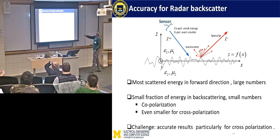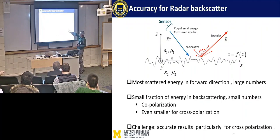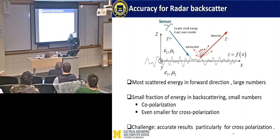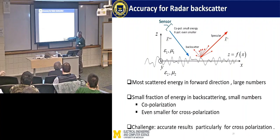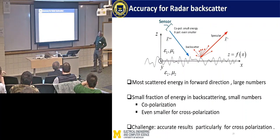For radar, most of the energy goes to the specular direction, but when you go to the backscattering direction, the amount of energy is very small compared to the total. When you solve Maxwell's equation, you can get a very accurate solution in the specular direction. But in the backscattering direction, are you accurate enough? This is another question about numerical simulations — can you solve Maxwell's equations numerically to an accuracy of 10 to the minus 3 or 10 to the minus 4?